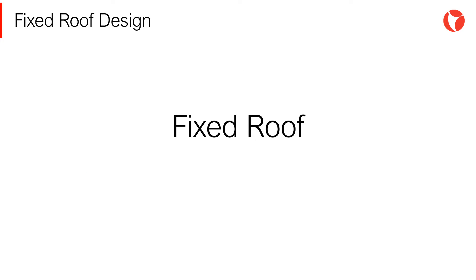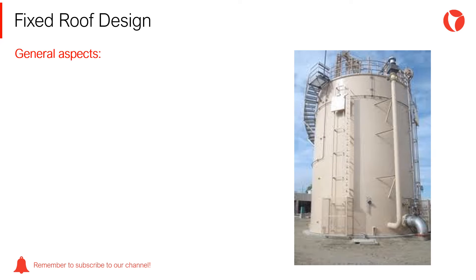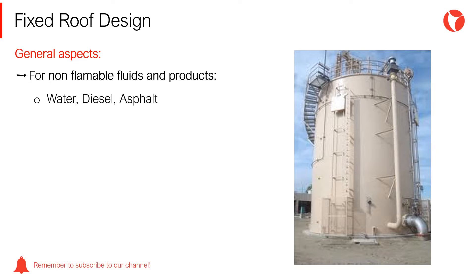Storage tanks with fixed roofs are used to store non-volatile liquids with a low content of light, non-flammable products such as water, diesel, asphalt, crude oil, etc. These types of roofs are mainly used for the storage of non-flammable fluids and products such as water, diesel, and asphalt.